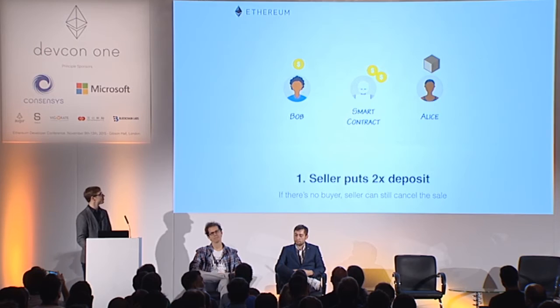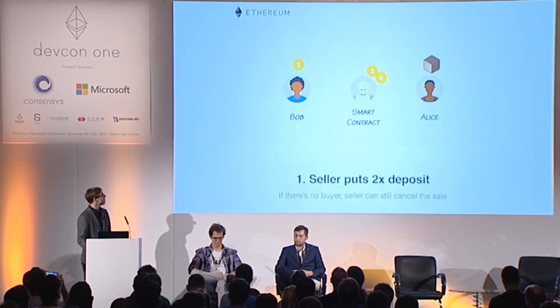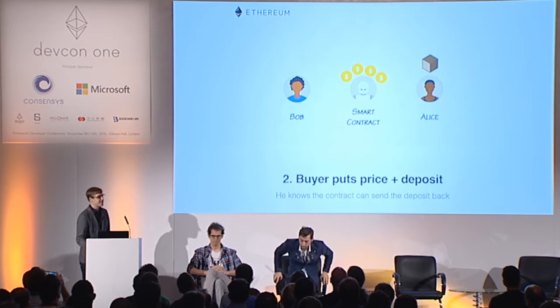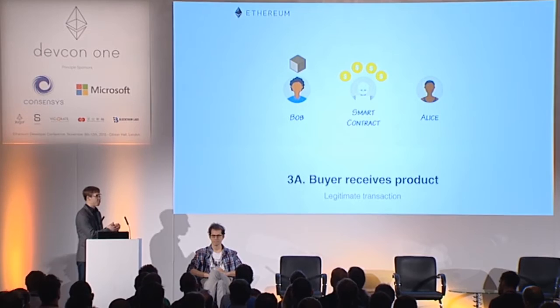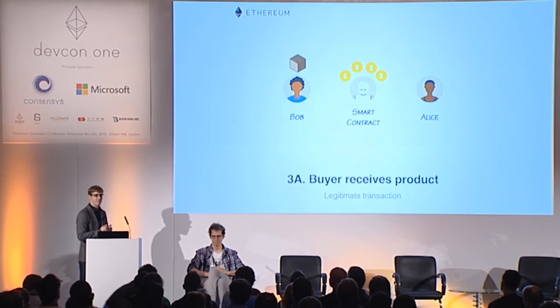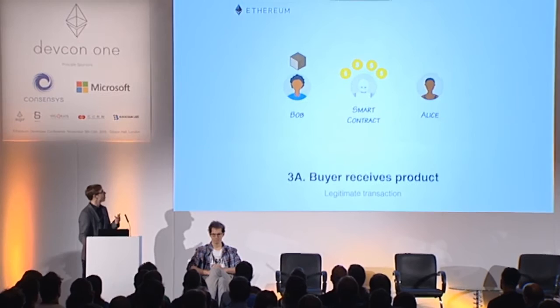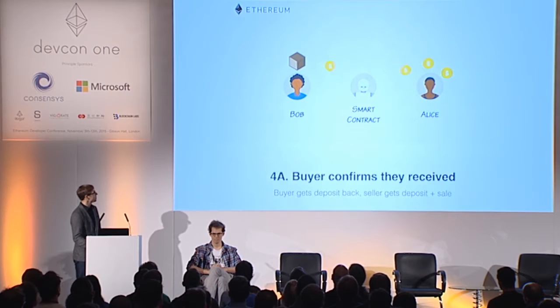What we do is the seller puts a deposit of two times the item value, and then Bob puts the same deposit into the contract. Then Alice sends the item to Bob. At this point, for both Alice and Bob it's impossible to withdraw the money from the contract. The only option Bob has is to say 'yes, I received the item, it's exactly what you promised.' So Bob can pull out his deposit and send the three other coins to Alice.